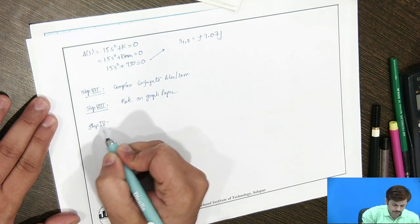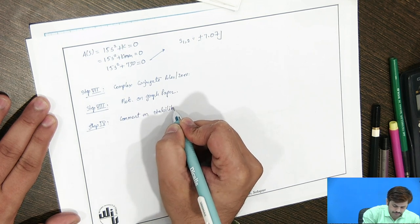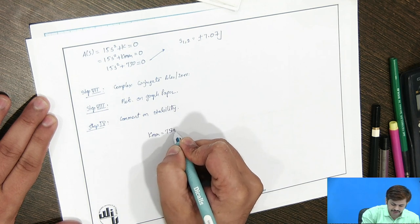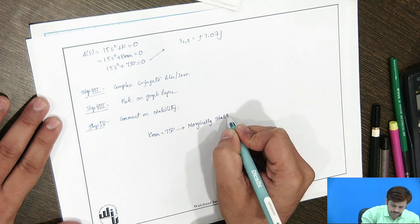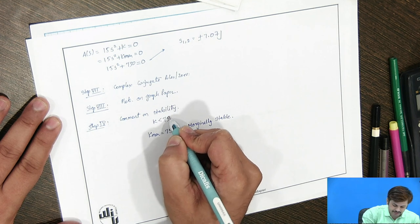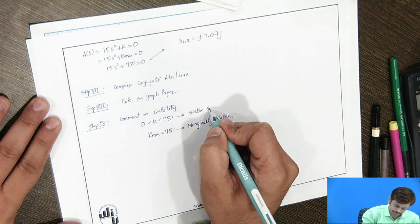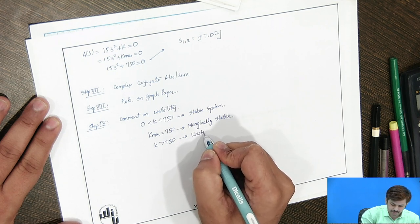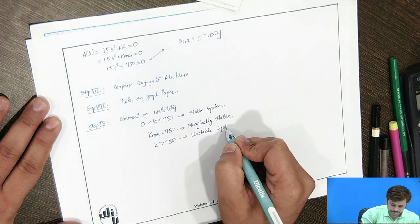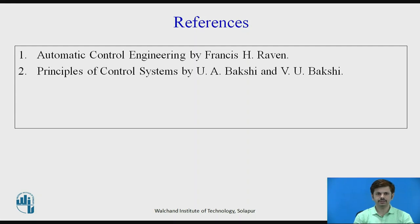In step number 9, we comment on stability. The k_marginal value is 750, which means the system is marginally stable at that value. When k is between 0 and 750, the system is stable. When k is greater than 750, the system is unstable. These are the references. Thank you.